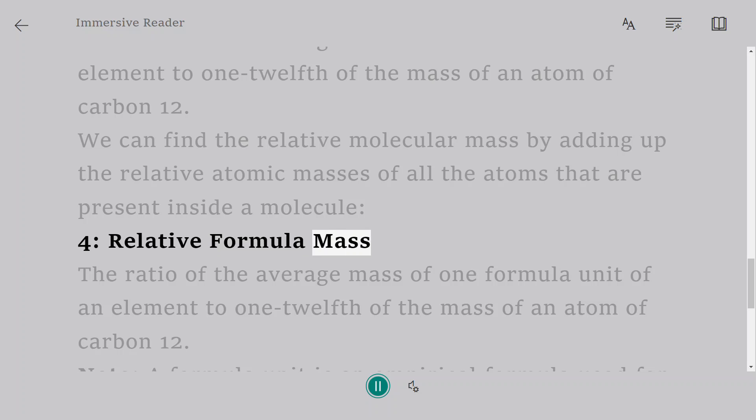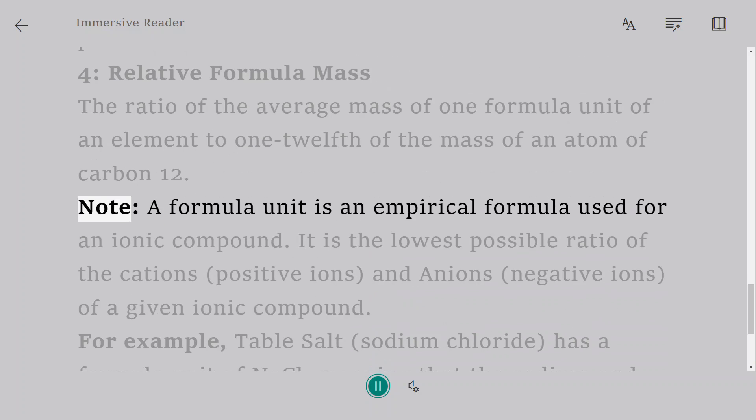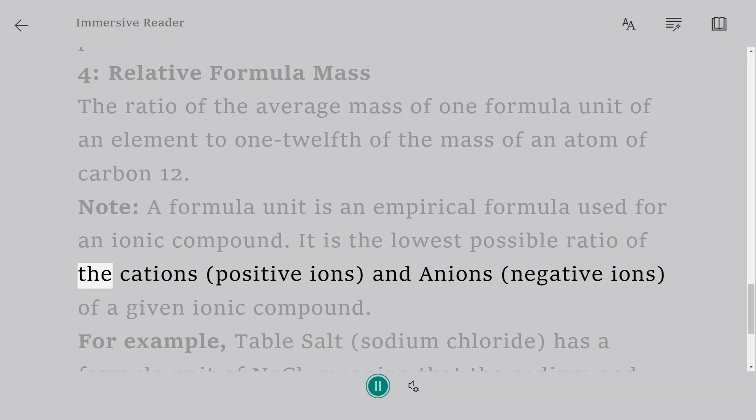Relative Formula Mass: The ratio of the average mass of one formula unit of an element to one-twelfth of the mass of an atom of carbon-12. Note, a formula unit is an empirical formula used for an ionic compound. It is the lowest possible ratio of the cations (positive ions) and anions (negative ions) of a given ionic compound.